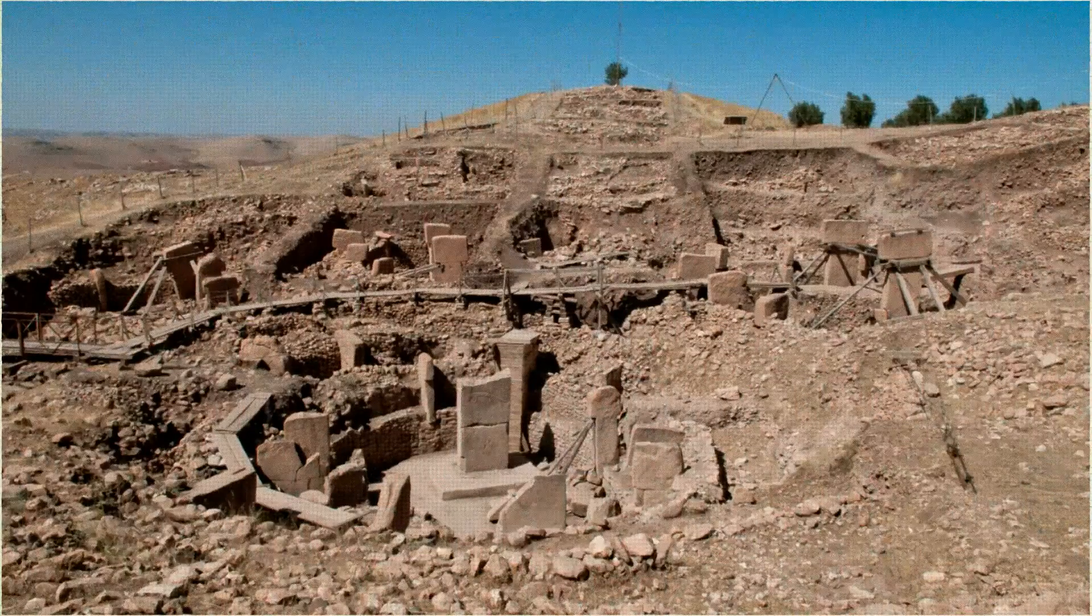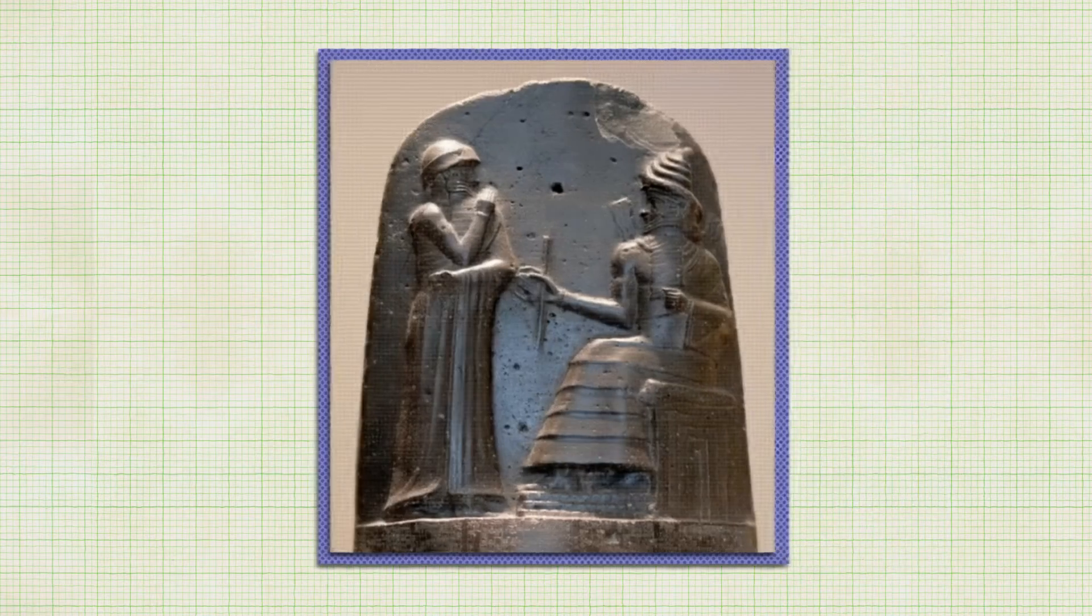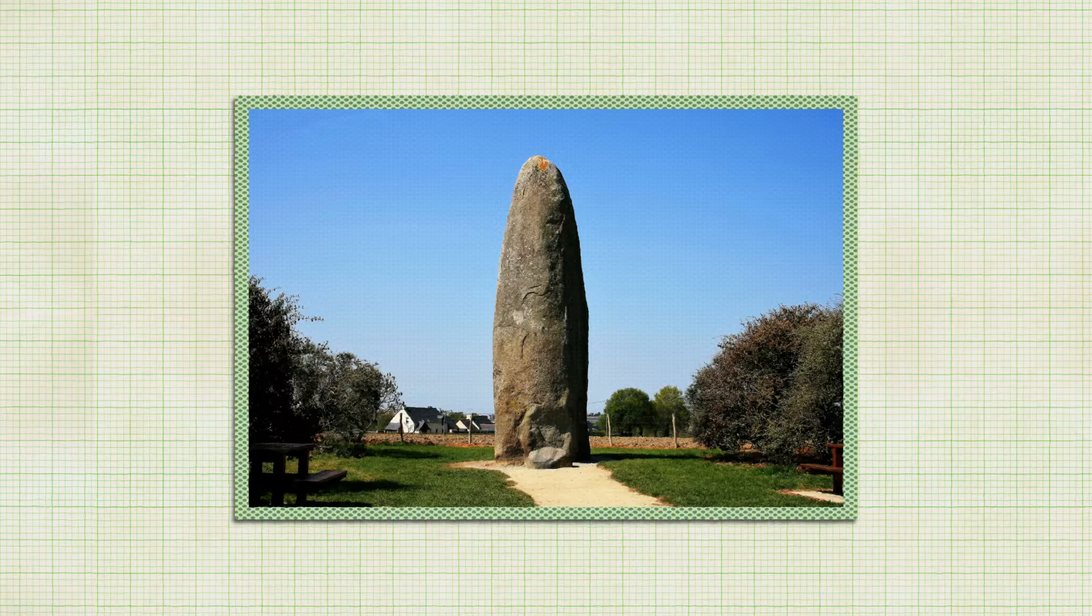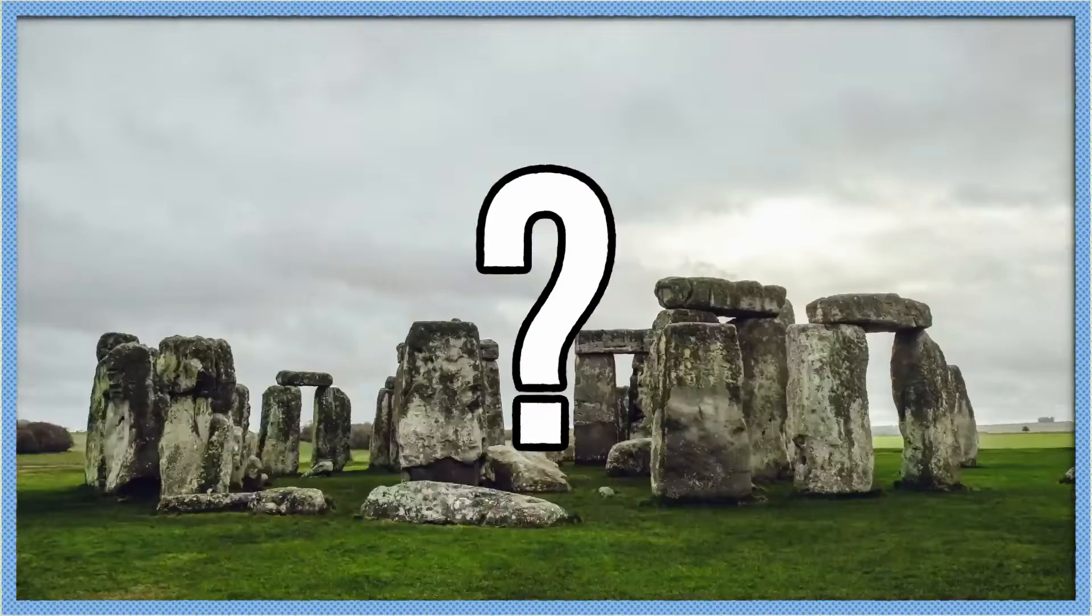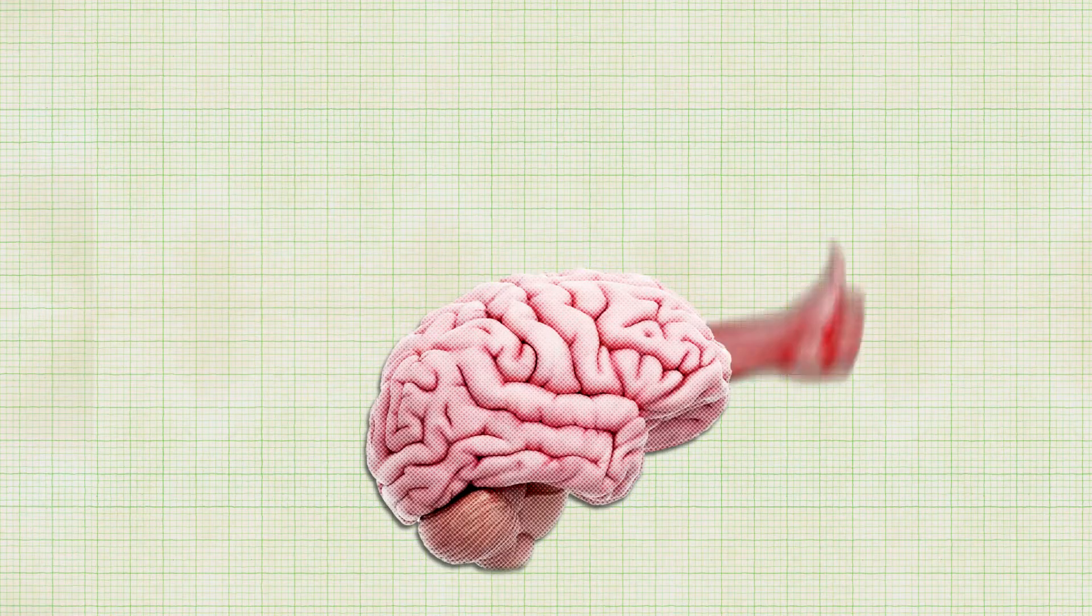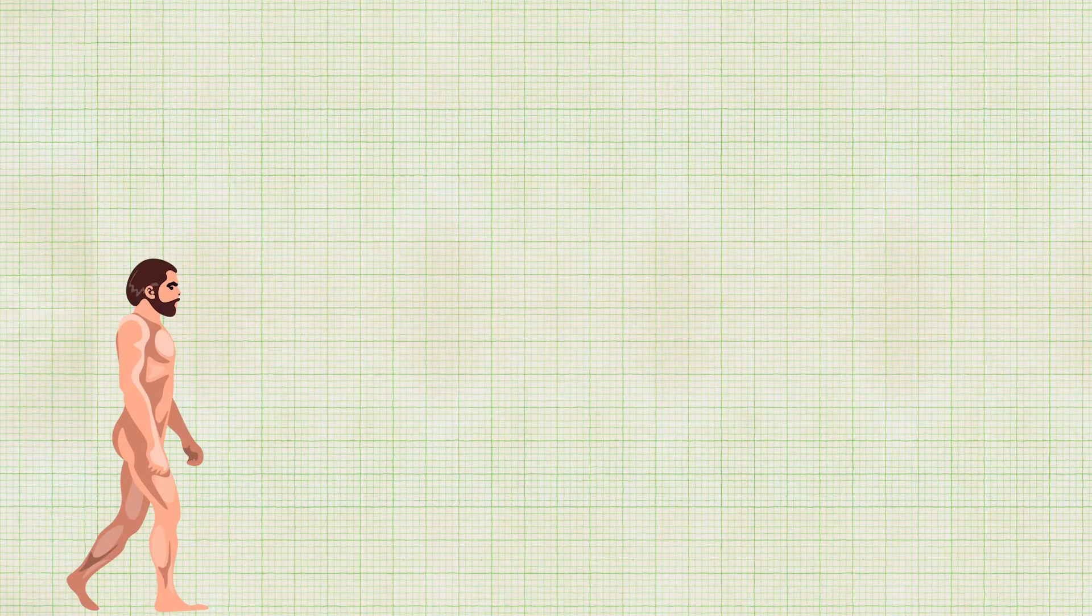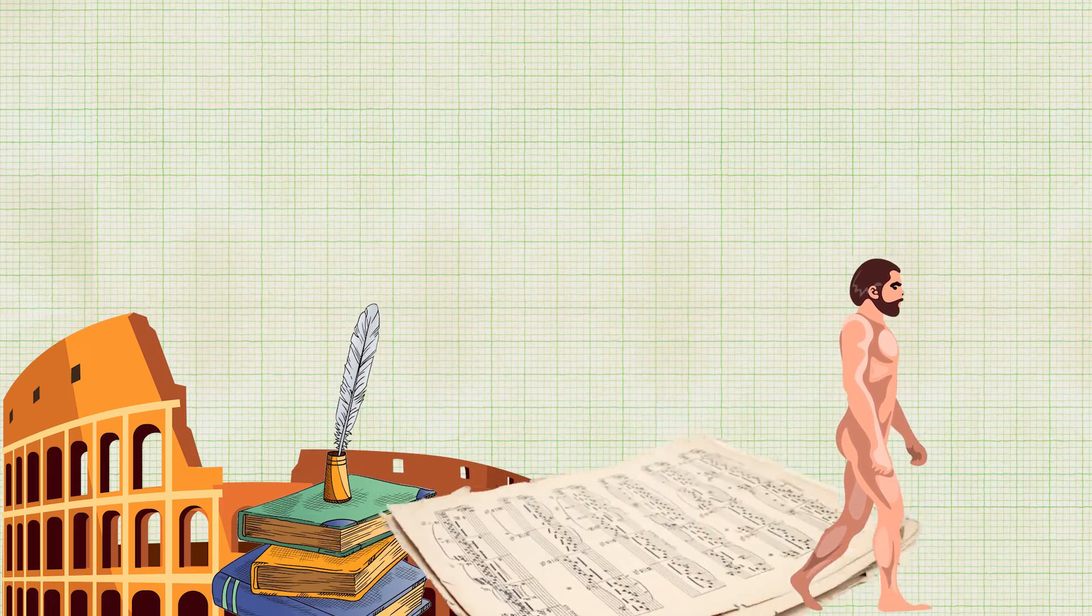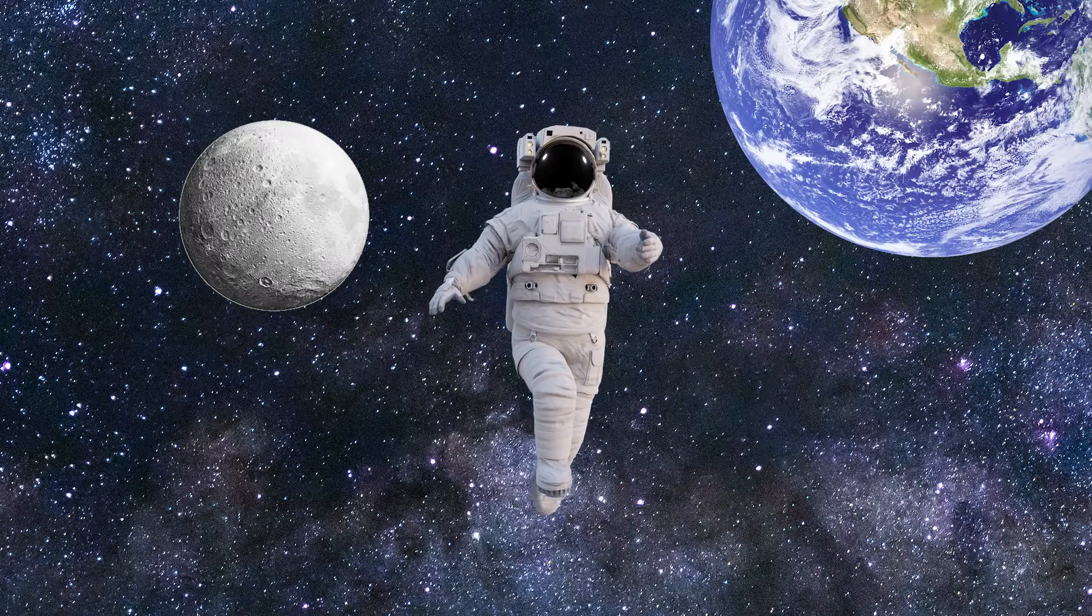And even then, once our prehistoric ancestors started doing all those human-ish things around 40,000 years ago, it took them another 30,000 plus years before they got around to organizing anything you might call civilization. After that, things started to progress relatively quickly. But you have to wonder, what took them so long? They had the brain capacity, they had opposable thumbs, they walked upright. What more did Homo sapiens need to become the monument building, poetry writing, symphony composing, atom splitting, space exploring, planet-dominating superpower of a species that we are today?